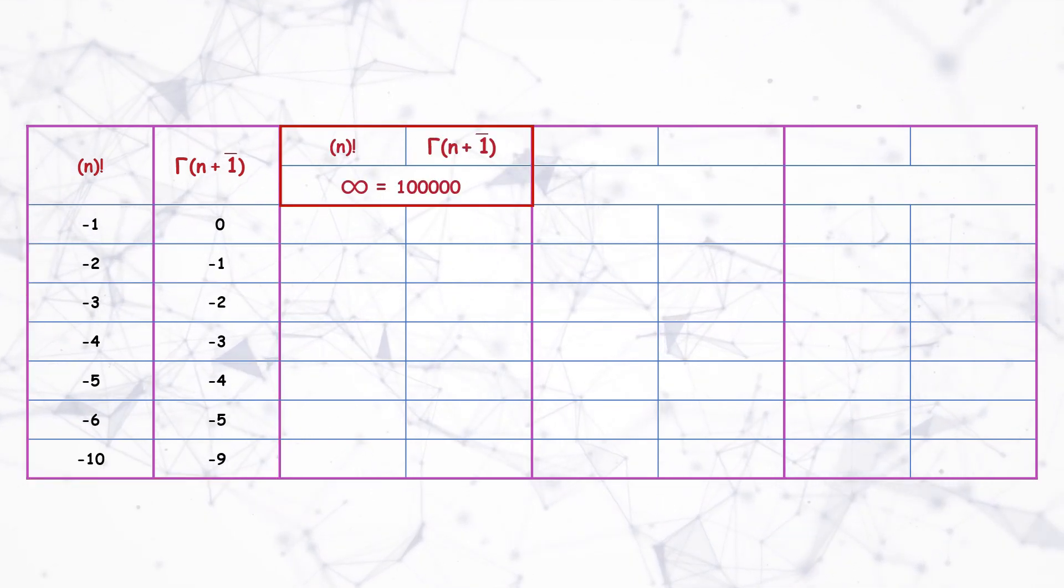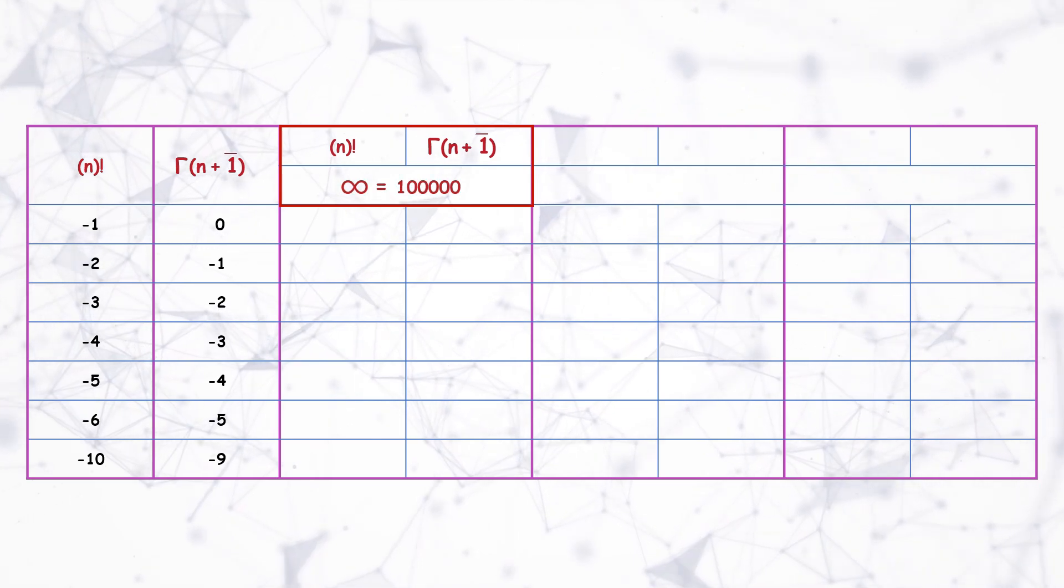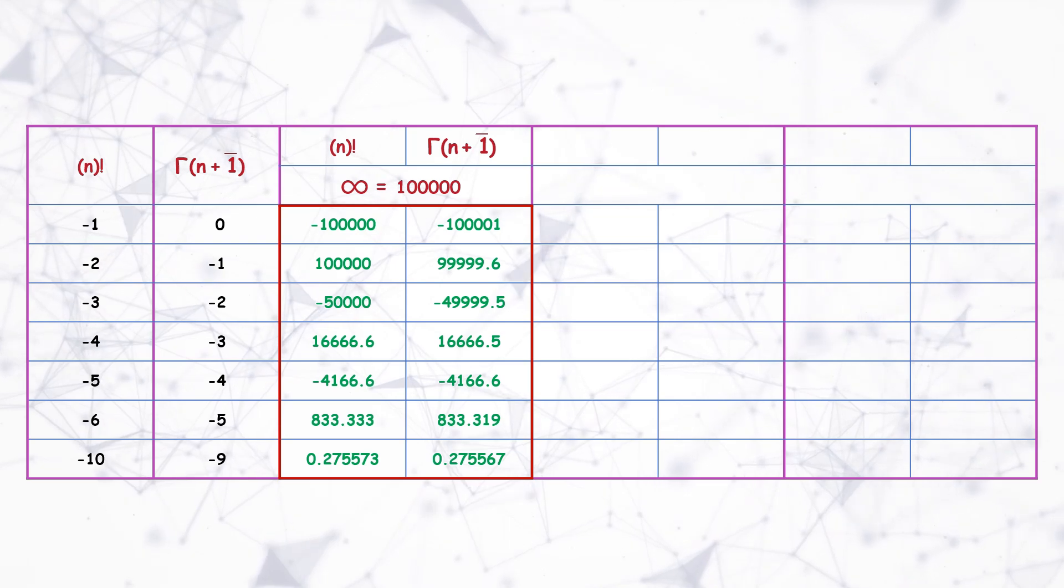So minus 1 factorial is gamma 0 as per the relation. Negative 2 factorial equals negative 1 gamma, and similarly few more points. Since we have to use a calculator, we will replace value of infinity as a very large value. And we will do three such iterations. So when infinity value is 10 to the power 5 we get the following results. Here values are nearly the same.